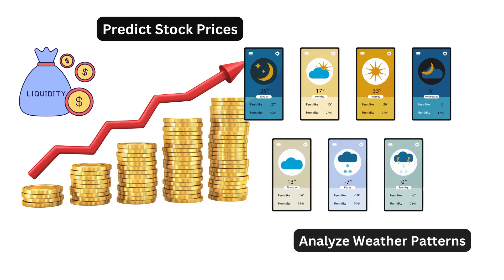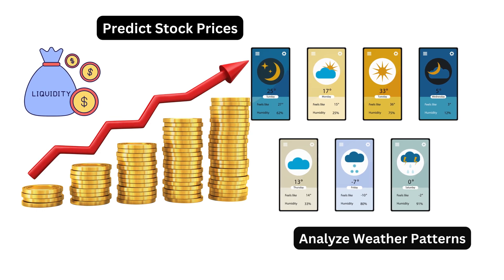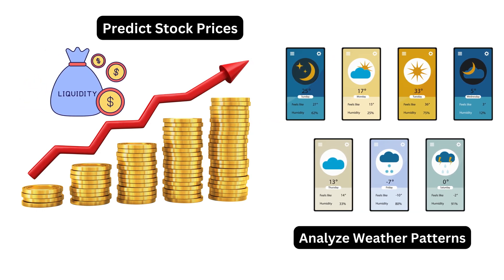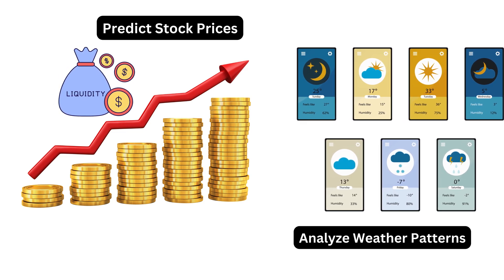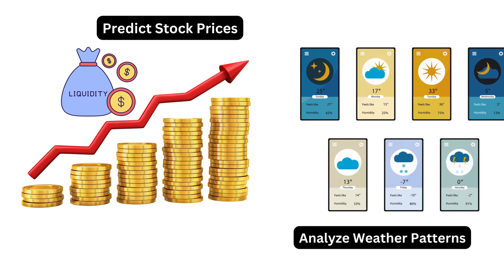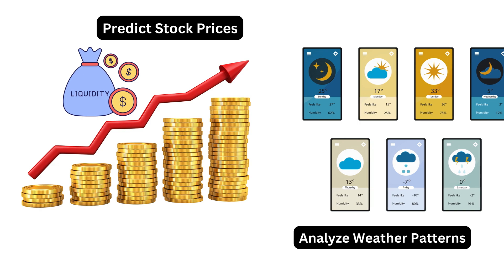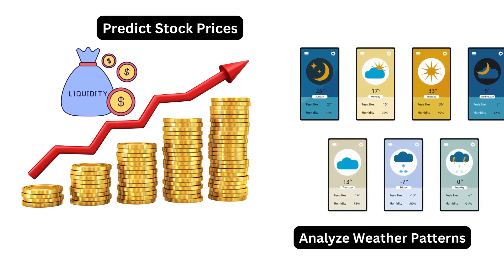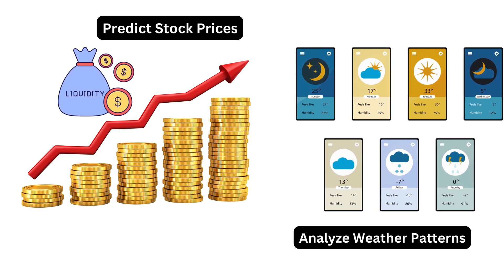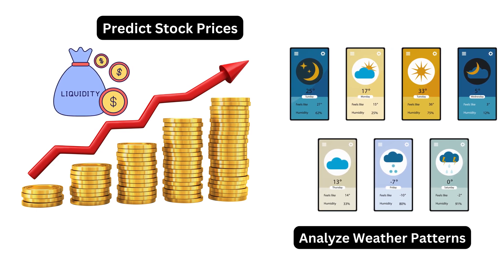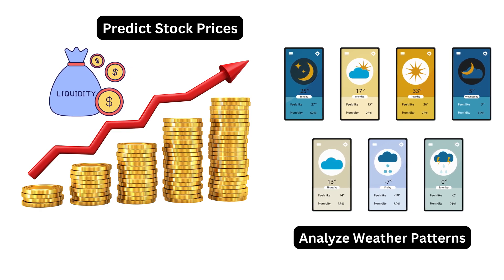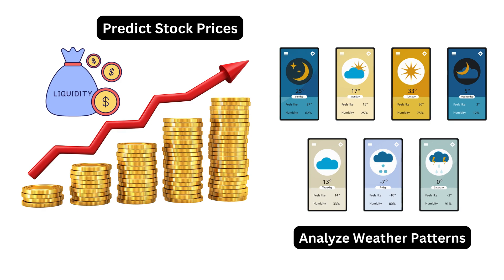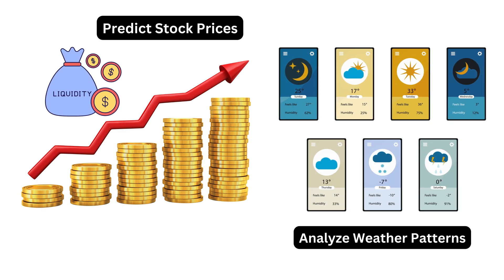Now let's focus on Liquid Neural Networks, or LNN. This model is designed to capture temporal dynamics, meaning it's great at learning from sequences of data that evolve over time. Think of trying to predict stock prices or analyze weather using time series data. LNNs are useful for tasks where data changes over time, like the example we're going to work with — predicting a sine wave.